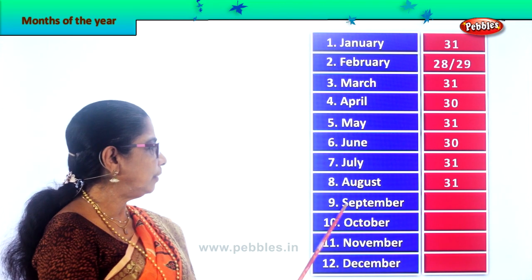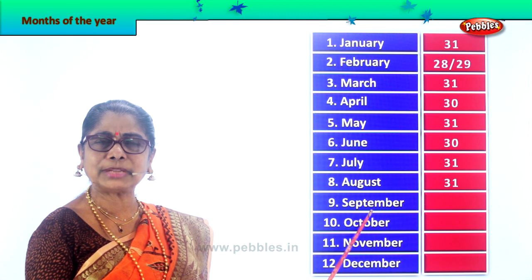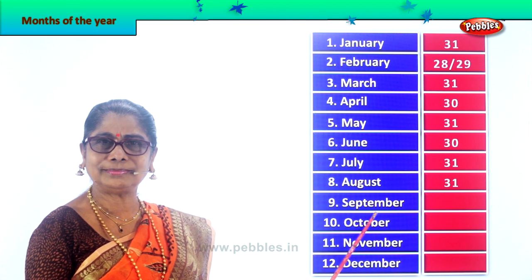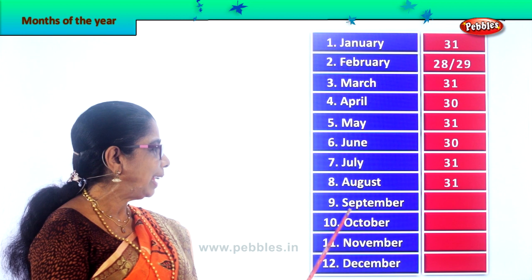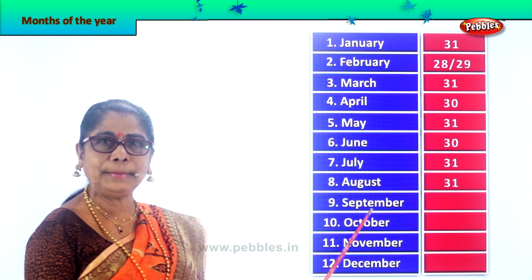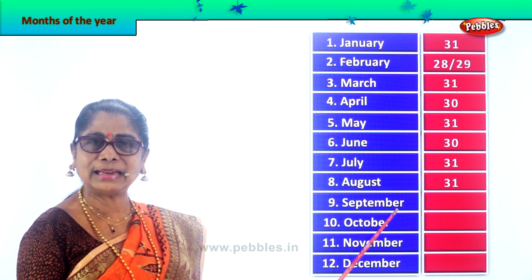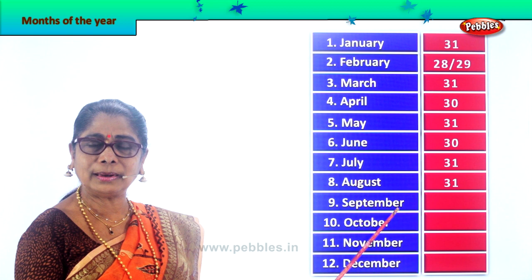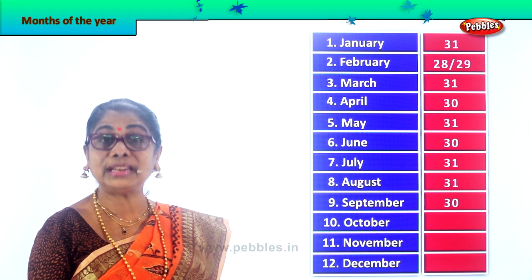Next we have September — your exams come along and you look forward to more holidays. Spell September — S-E-P-T-E-M-B-E-R, September. How many days in September? 30 days. September has 30 days.